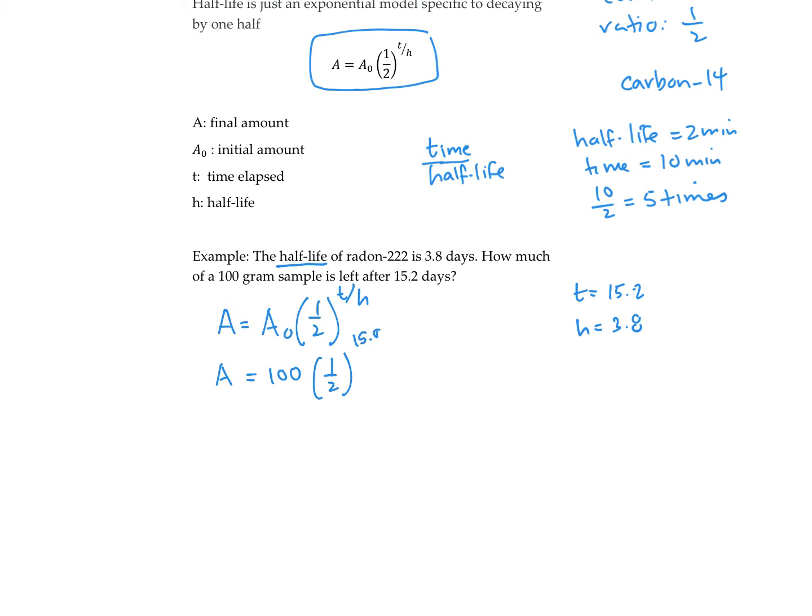So we would put 15.2 over 3.8. So if you're going to type this all into your equation, make sure you put this in brackets so that it does it in the correct order. So I would do 100 bracket one-half or 0.5 to the power, and then I would put my exponent in brackets so that it divides the numbers before it does the power. And my final amount left is 6.25 grams.